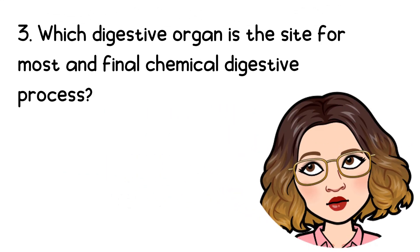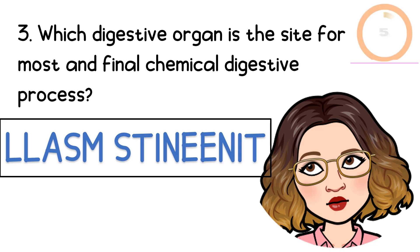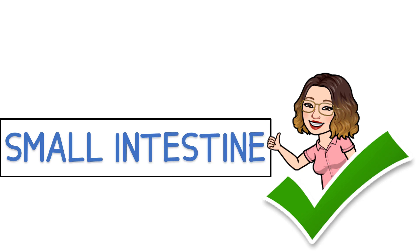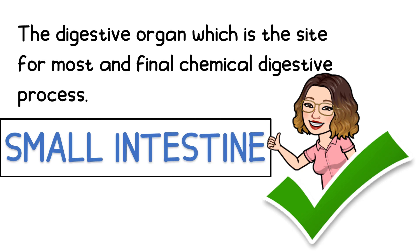Number 3: Which digestive organ is the site for the most and final chemical digestive process? Excellent! The small intestine is the answer. It is the digestive organ which is the site for the most and final chemical digestive process.